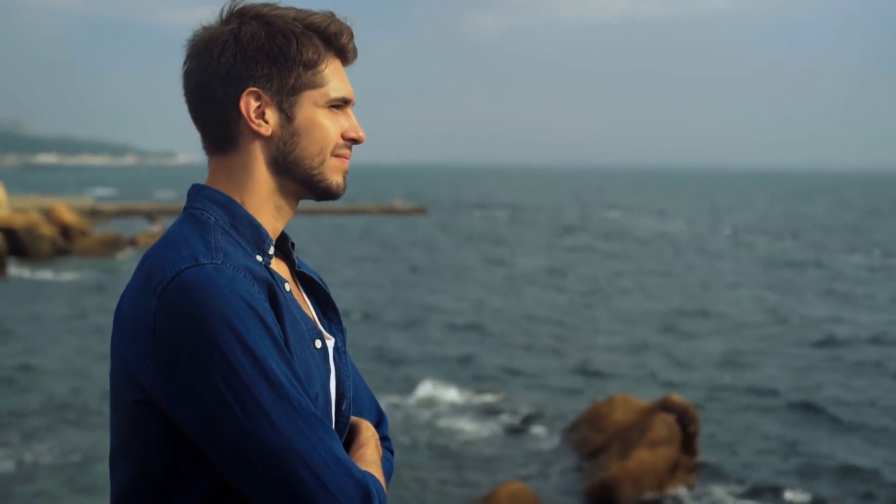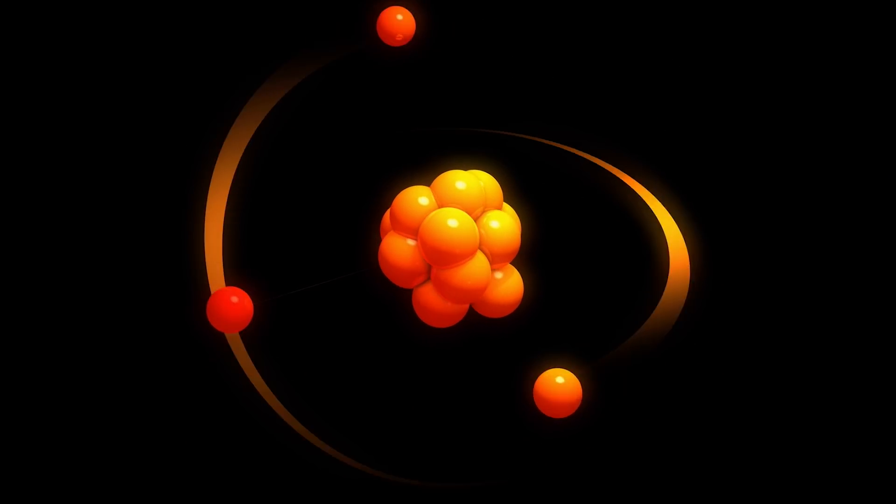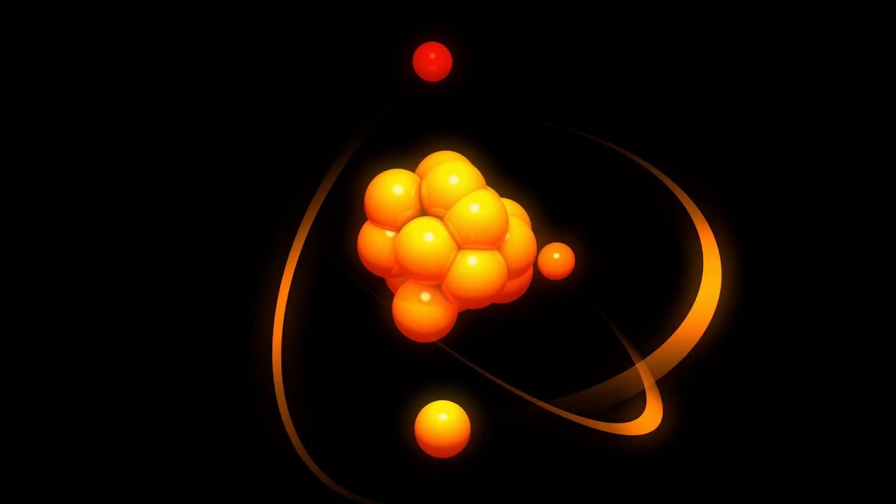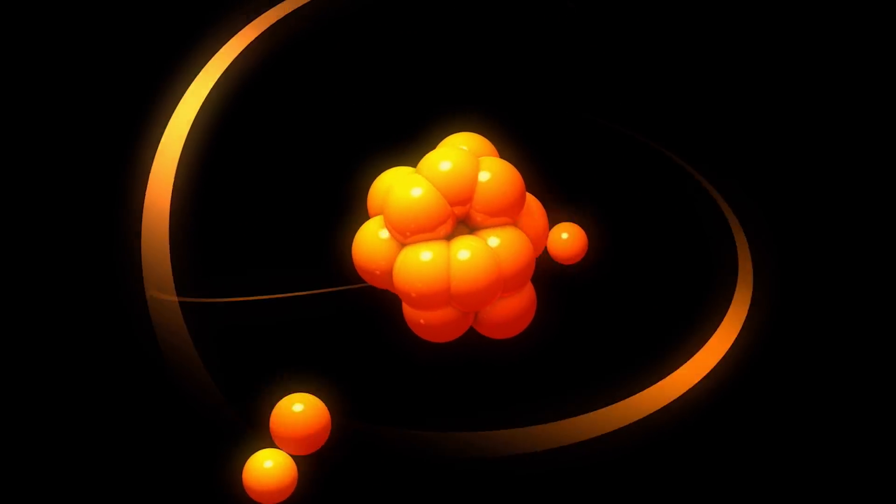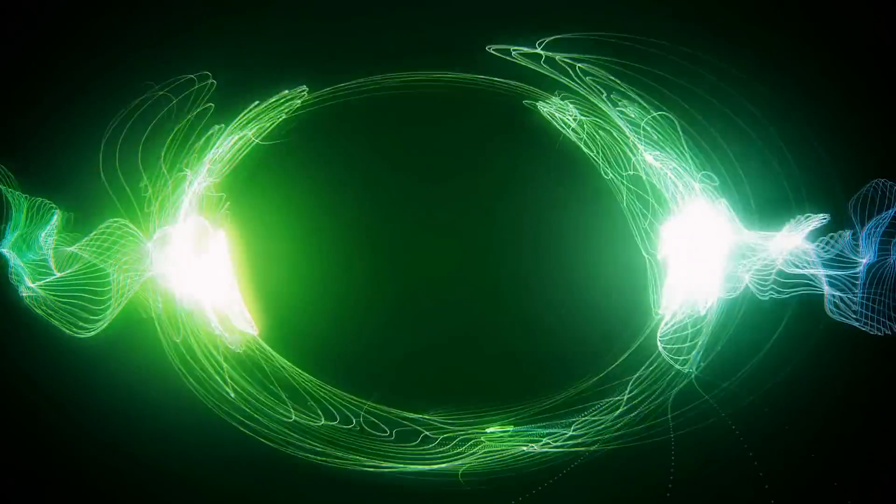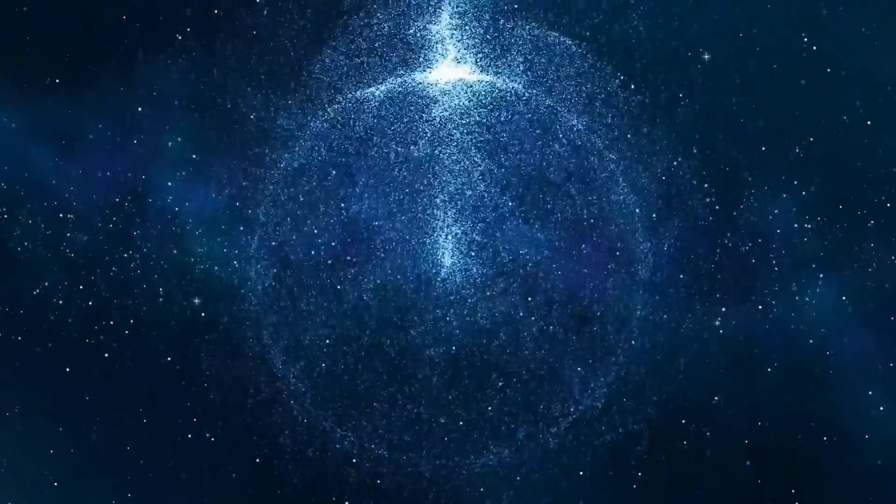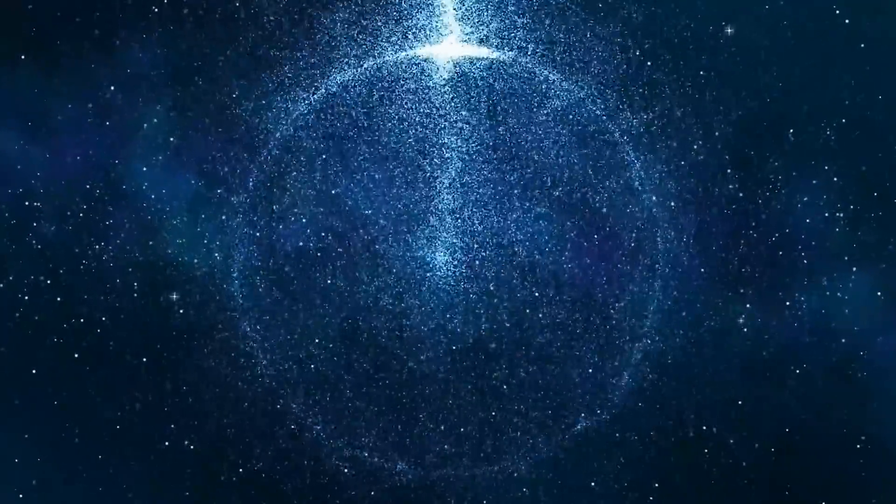To understand quantum teleportation, let's consider two people, Alex and Brandy. Alex is on Earth and Brandy is at the ISS. Alex wants to transfer photon C to Brandy. For this process, we will need a pair of entangled particles. Let's call each of the entangled particles as A and B respectively. Now Alex will keep one of the particles A with him, and the other one B will be with Brandy.